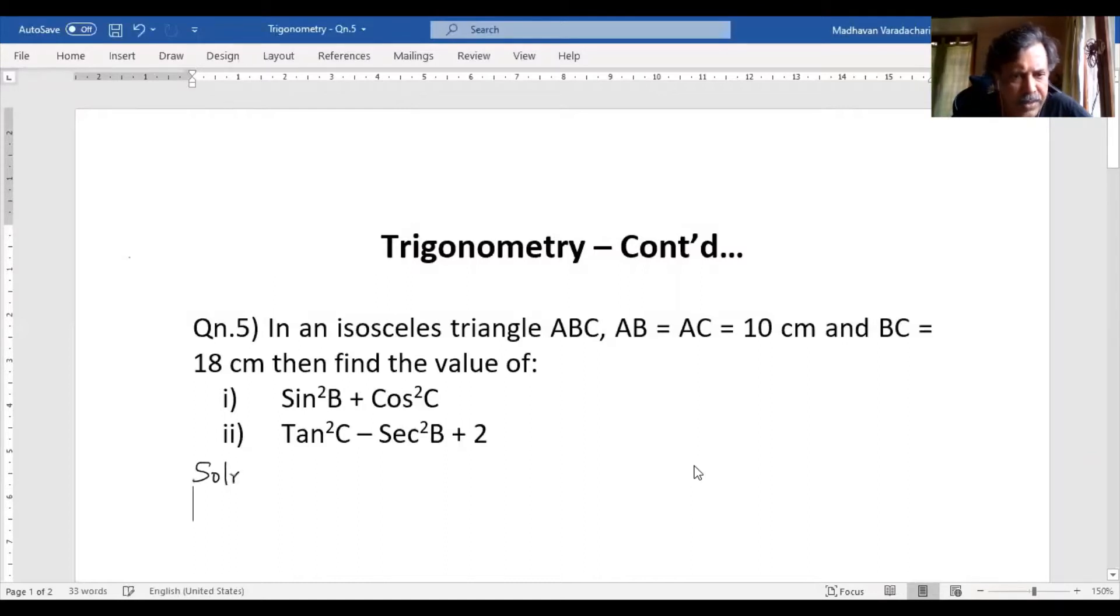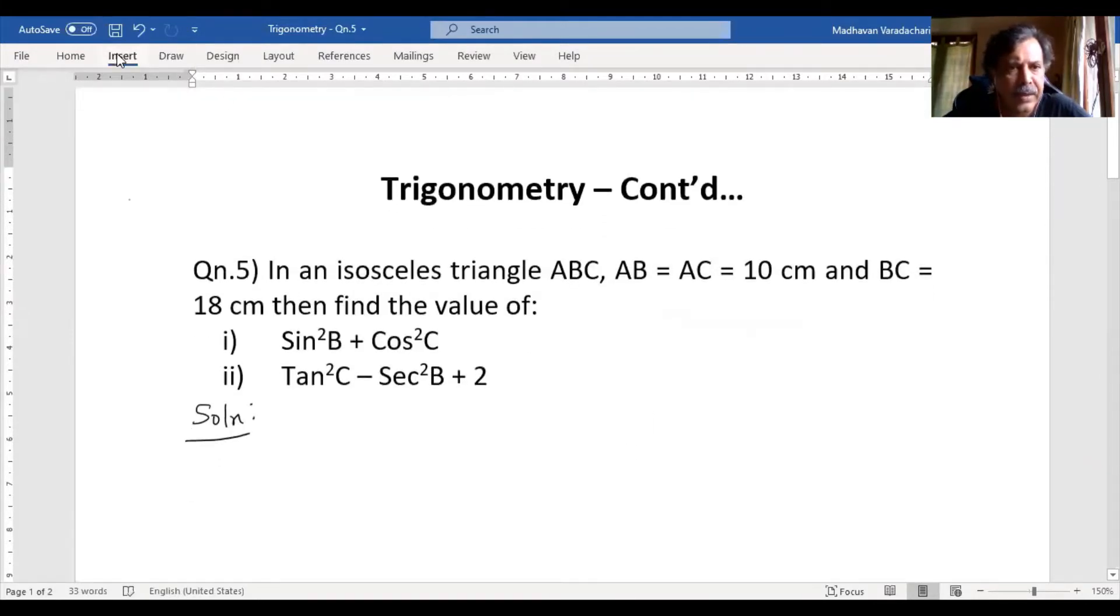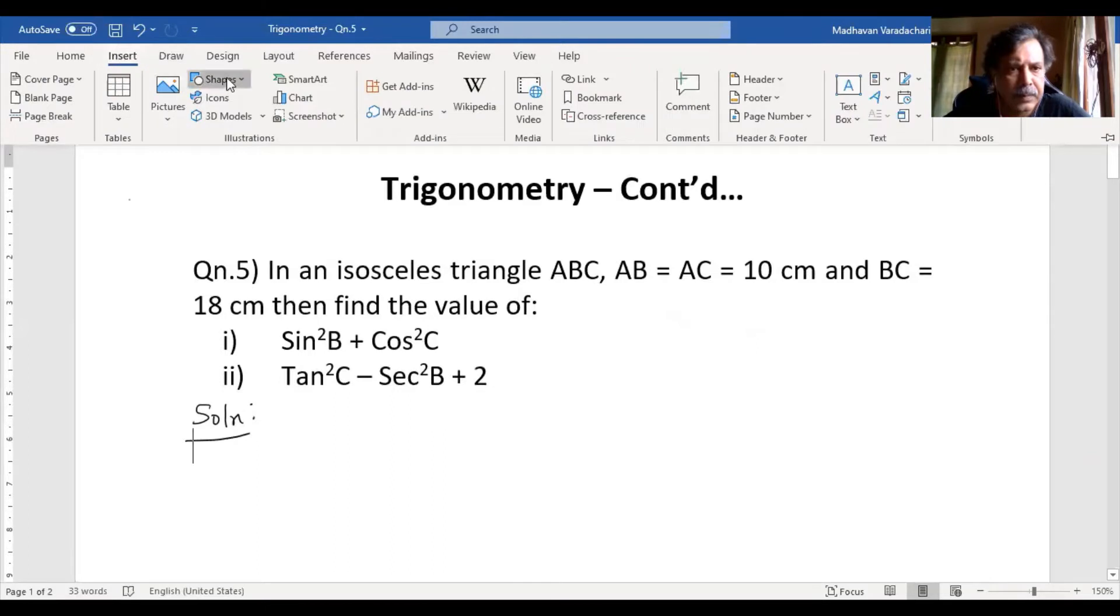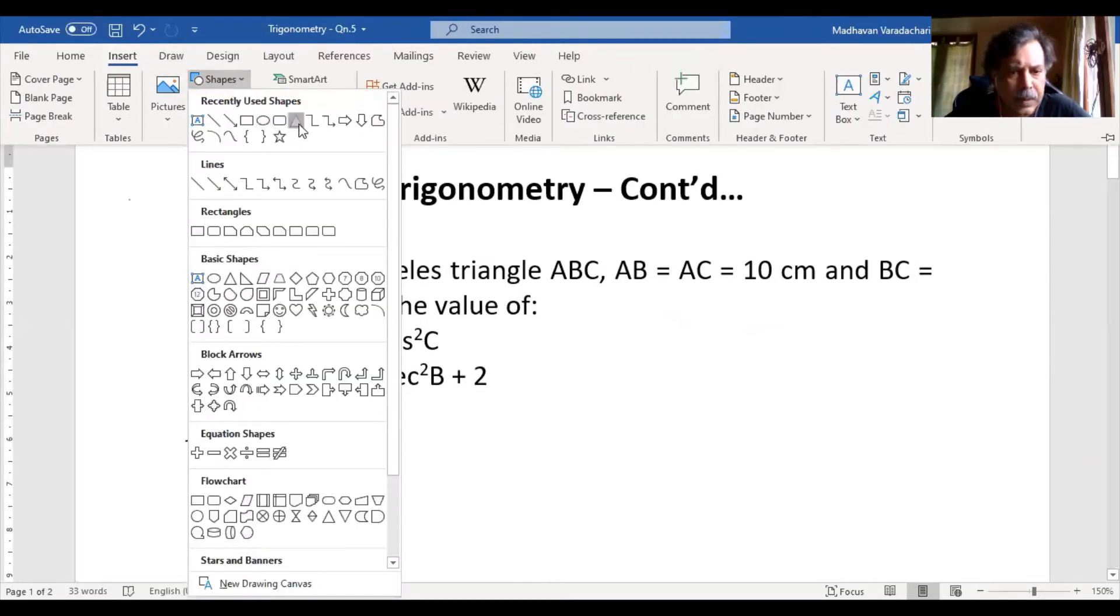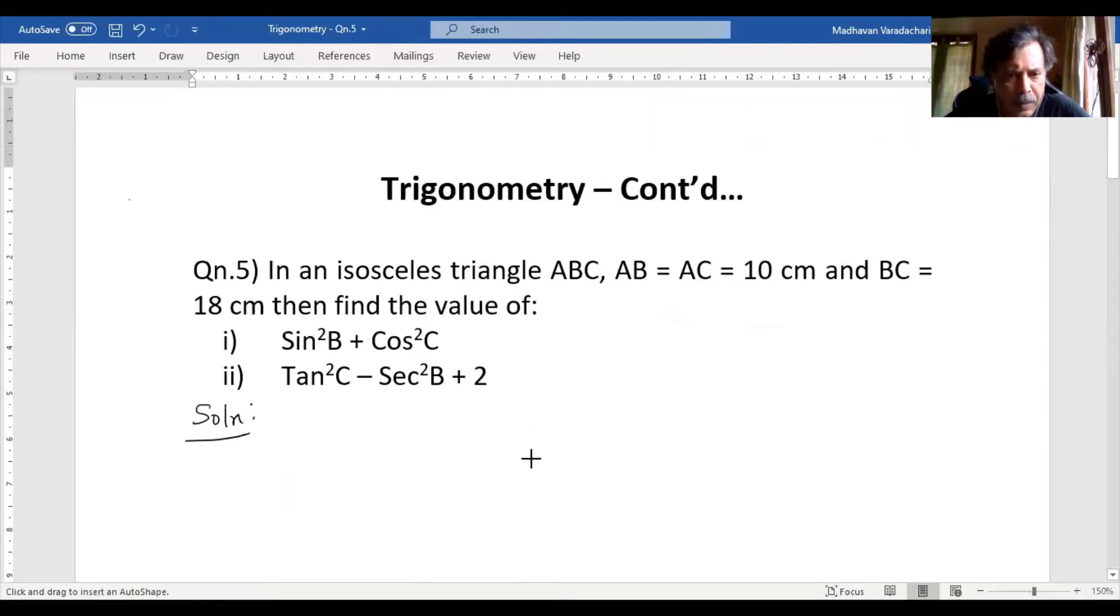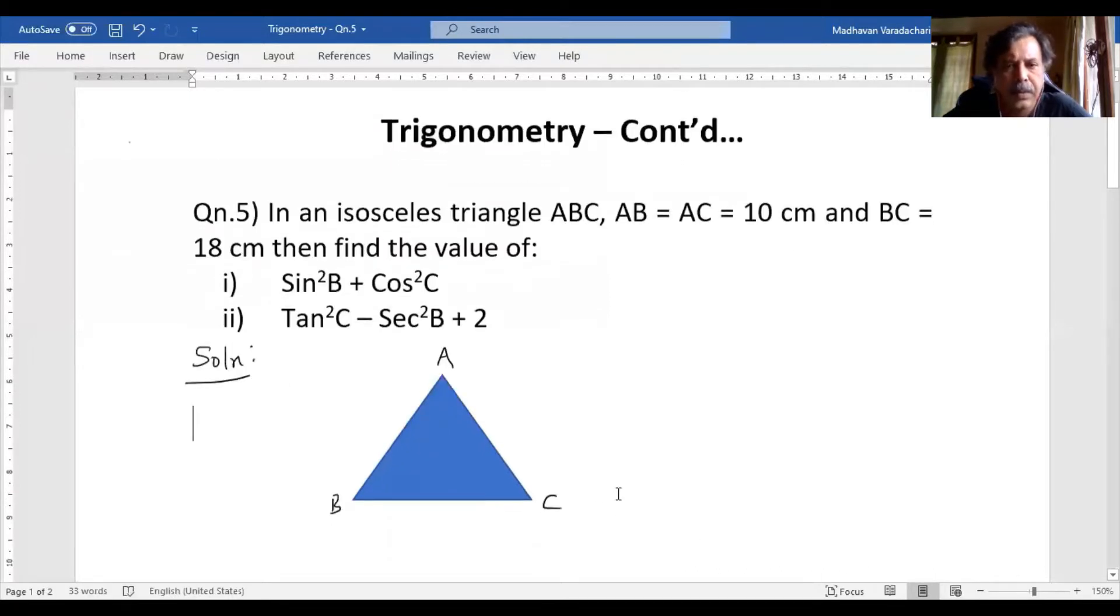The question says it is an isosceles triangle, so let us draw an isosceles triangle. It has given AB equal to AC, so let us consider this as A and this as B, this will be our C. So it says AB equal to AC, so this will be your 10, this also will be your 10.